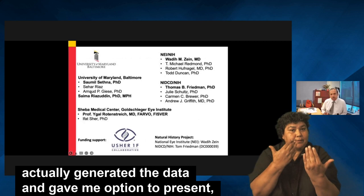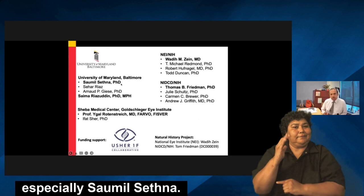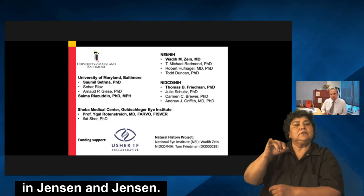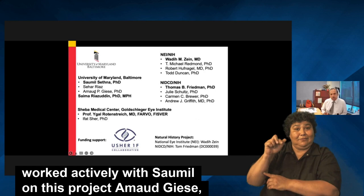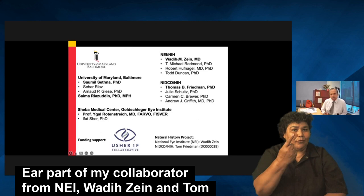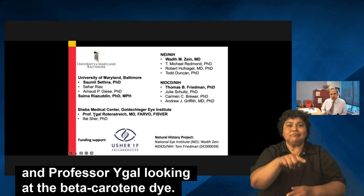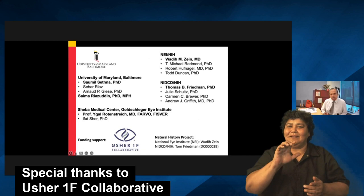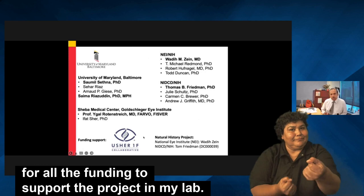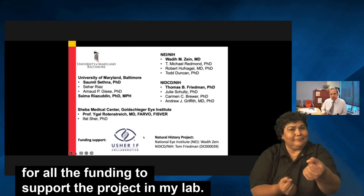I would like to thank all the people who generated the data — especially Sumil Sethana, a postdoc who is now a lead scientist at Janssen & Janssen, and Sahar Riaz, a graduate student who worked actively on this project. Thanks also to Arno Ghezi for the ERG phenotyping, my collaborator from NEI, Wadih Zein, and Tom Friedman for the human natural history study, and my ongoing collaboration at Sheba Institute with Ifat and Professor Yagli on the beta-carotene work. Special thanks to the Usher 1F Collaborative for funding, and to NIE and NIDCD for internal funding supporting the natural history project. Thank you so much — I'll be happy to take any questions.